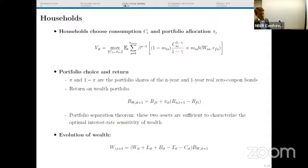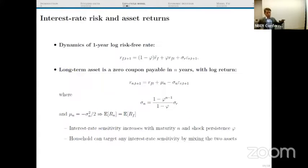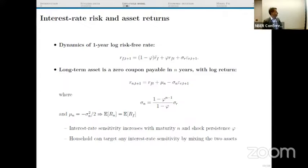Wealth evolves as: new wealth equals former wealth plus labor income plus social security benefits minus taxes minus consumption, times the return once the interest rate shock is realized. For the one-year interest rate we assume an AR(1) process, and the persistence of this process determines how a change in the one-year rate moves the entire yield curve. We assume, consistent with roughly the last 10 to 15 years of data, that there is no term premium — and since we assume coupons are perfectly safe in real terms, that is also a reason for assuming no term premium.